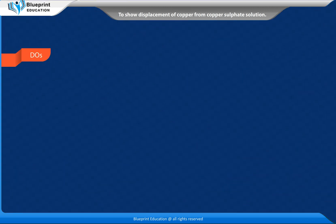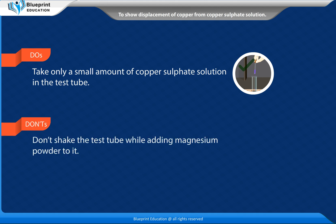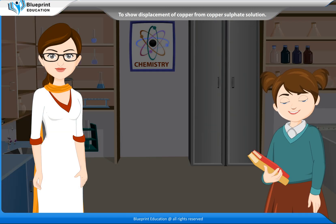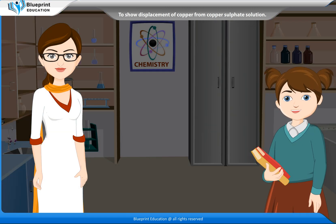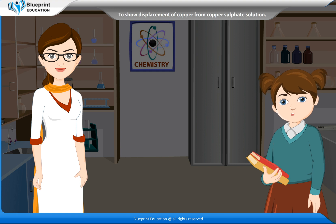Do's: Take only a small amount of copper sulphate solution in the test tube. Don'ts: Don't shake the test tube while adding magnesium powder to it. Thank you, madam. This experiment has made the concept very easy to understand.